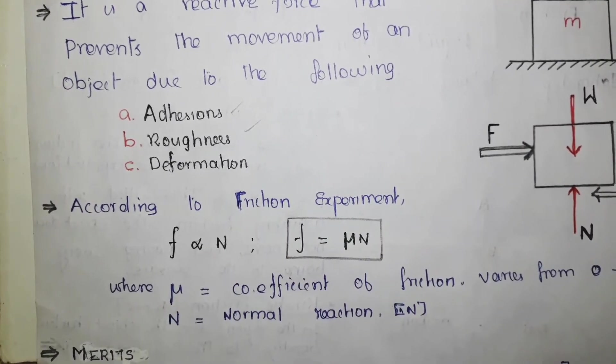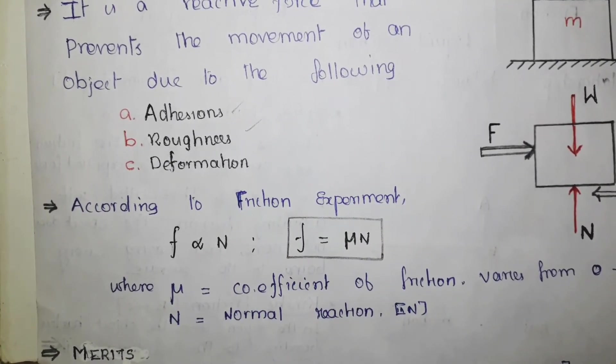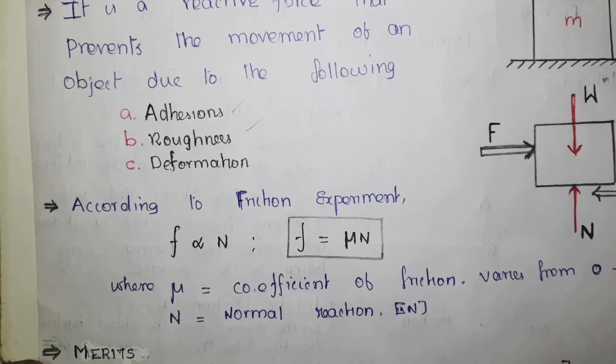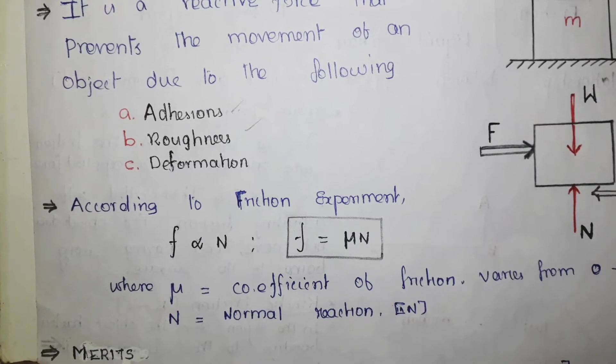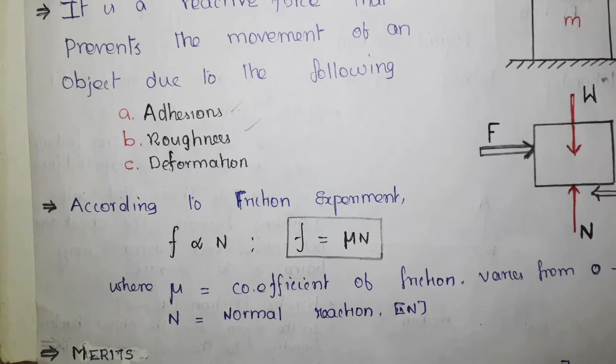Then the second one is roughness. We all know that every product is being manufactured by some process. And at the microscopic level, you could see the roughness at the surfaces. That roughness, the projections, prevent the movement of one surface over another surface.